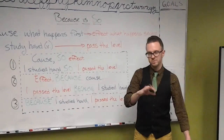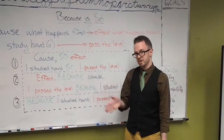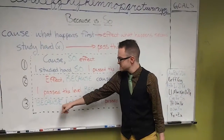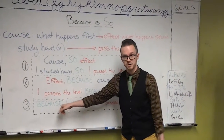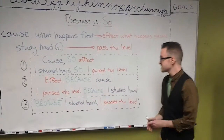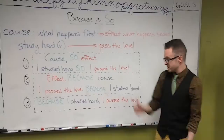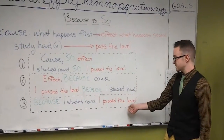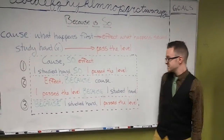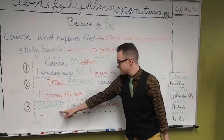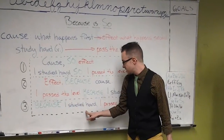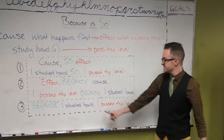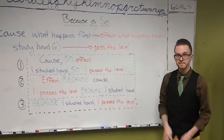The third example, which is a little different but we do still use, is when you want to start the sentence with the word 'because.' In this case it still goes: the first thing, the cause, then the second thing, the effect. So we can say: 'Because I studied hard, I passed the level.' And in this one, we also use a comma.